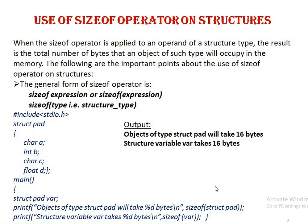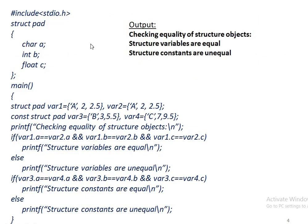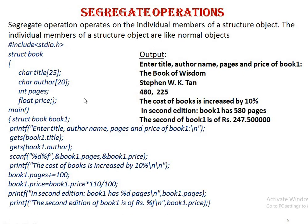Hence both printf statements will give 16 bytes. Regarding equating structure objects: two structure objects of the same type cannot be equated directly. We can only compare them member by member. In this example, variable1 and variable2 have the same member values — A equals 2.5 — so comparing member by member shows they are equal, while variable3 and variable4 are not equal.